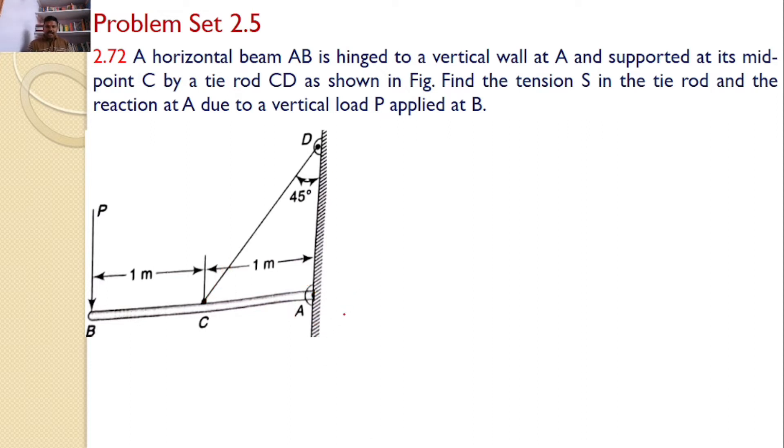Let us see what are the various forces acting on the beam AB. Let us draw the free body diagram. Here we can find a hinged support. Hinged support will introduce two reactions: horizontal reaction RAH and vertical reaction RAV.